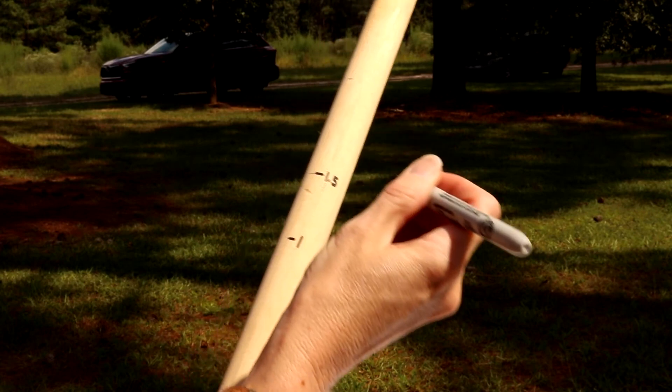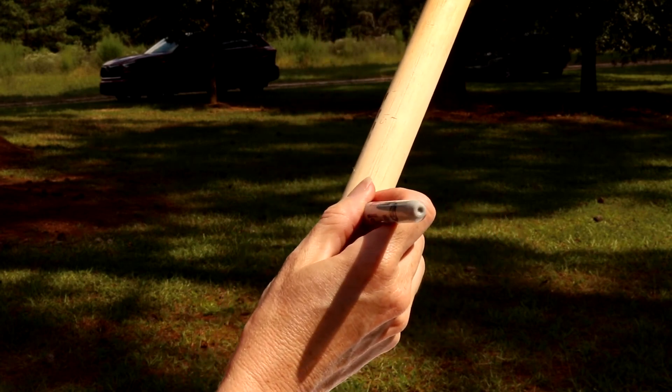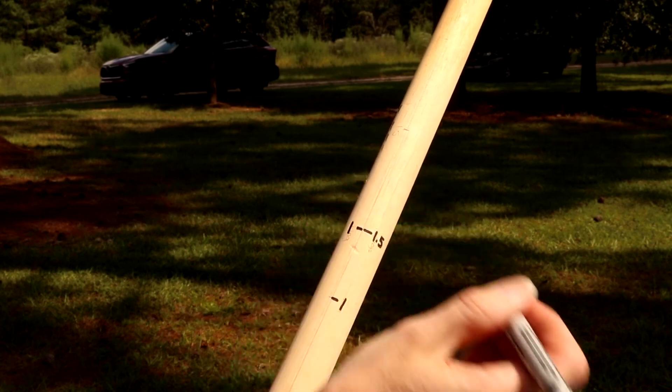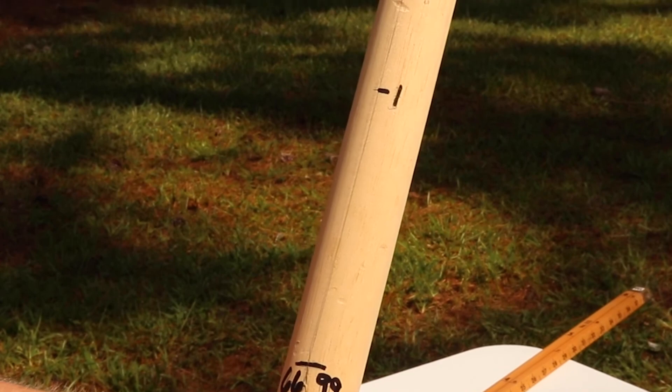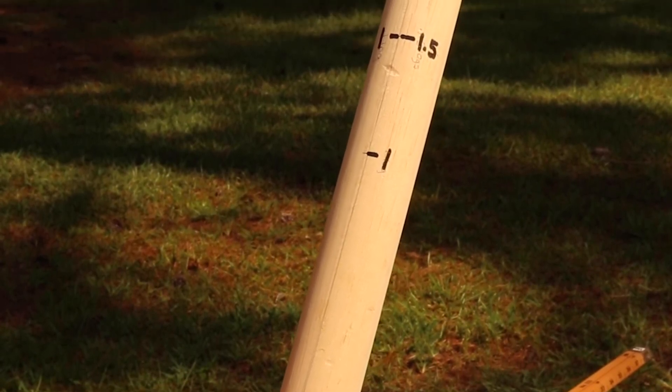After you are convinced your stick is properly marked, go over your pencil marks with a permanent marker or mark them in another permanent method. This is your chance to be creative. Now you're ready to measure tree heights using your personalized merit hypsometer.